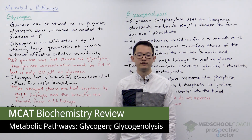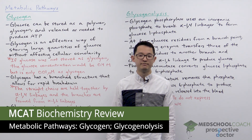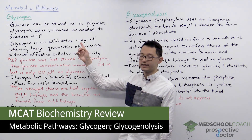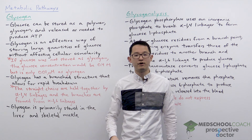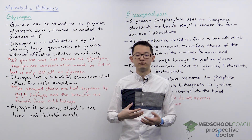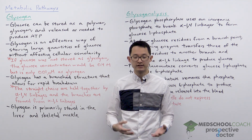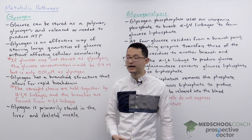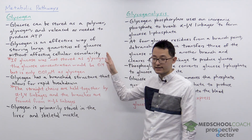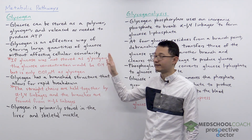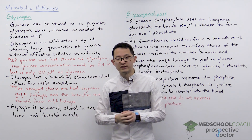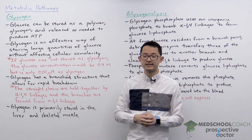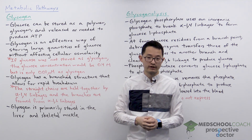In this video we're going to go over glycogen metabolism. Glycogen is a glucose polymer that can be readily broken down to release glucose for ATP production. Glycogen is highly effective for storing large quantities of glucose without affecting cellular osmolarity.